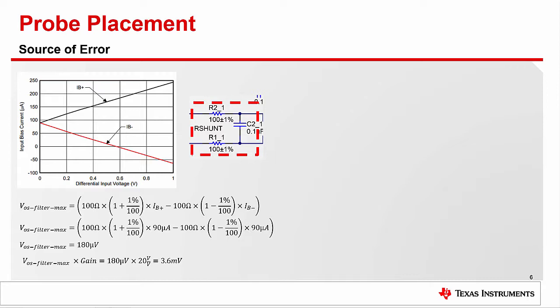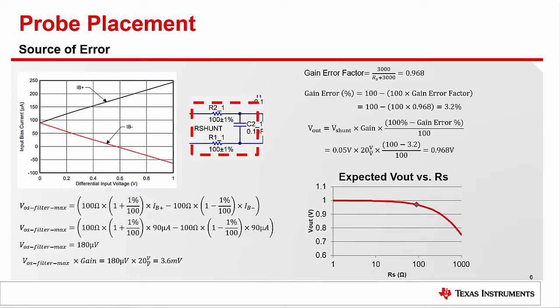Well, we are actually quite close now. Further digging into the datasheet reveals gain error formulas. After putting our filter resistance values in the formula, we see that our output could be as low as 968 millivolts, neglecting all other sources of error. It is because of this gain error issue we typically recommend all filter resistors be no greater than 10 ohms for most of our devices.